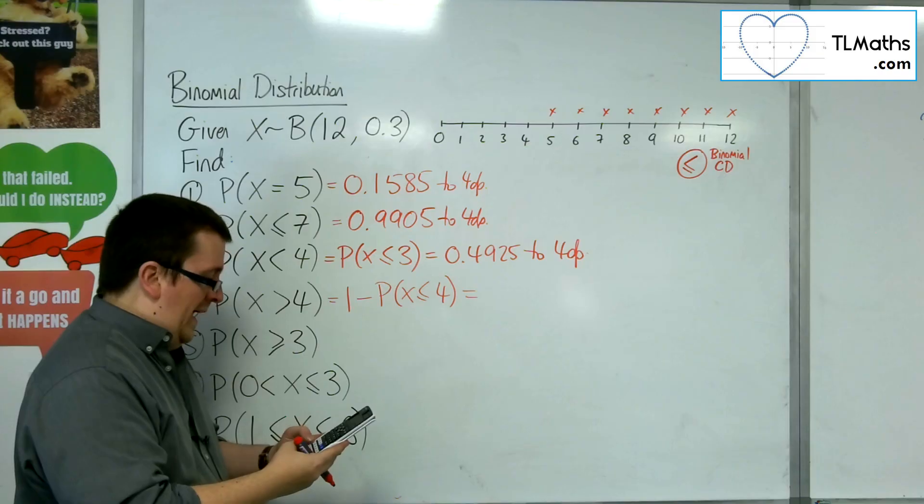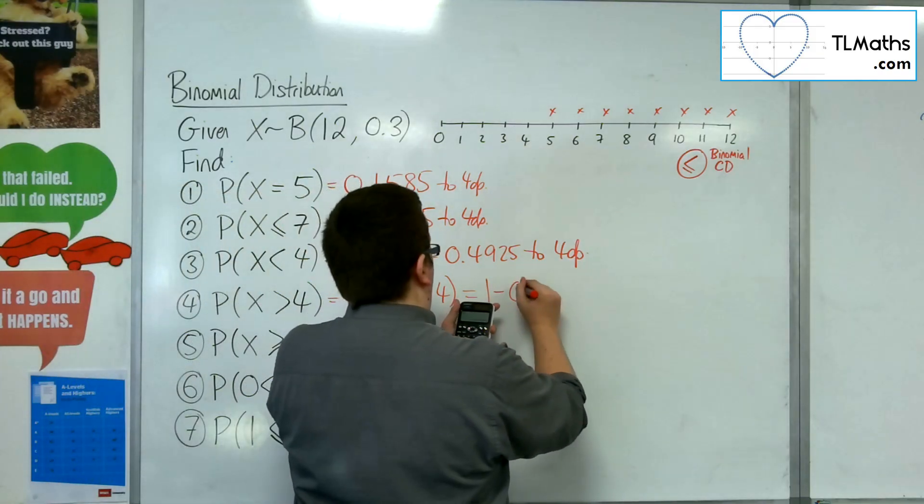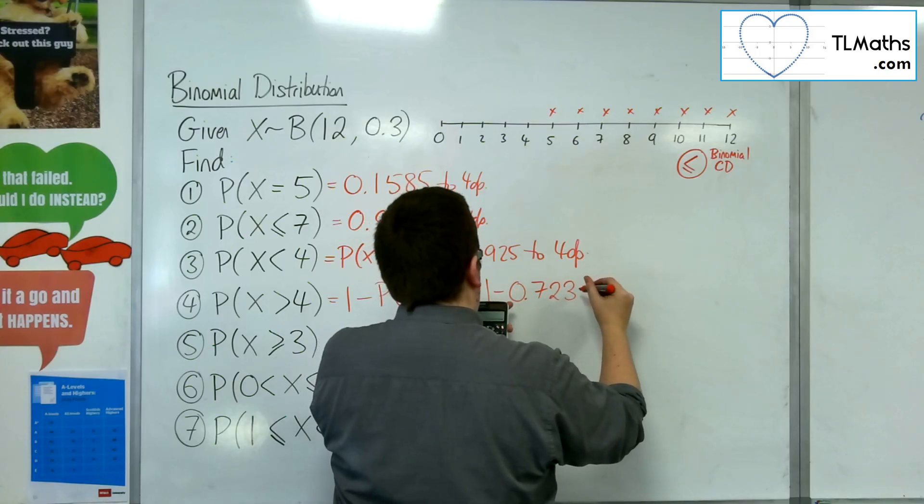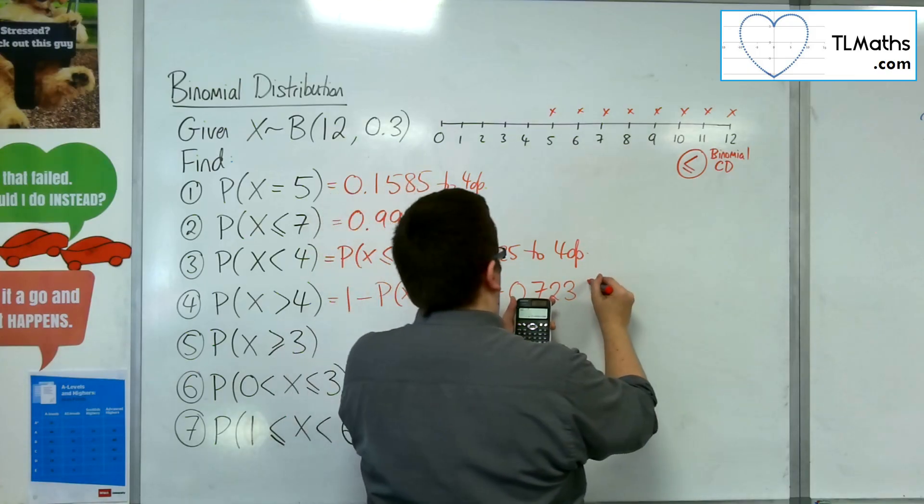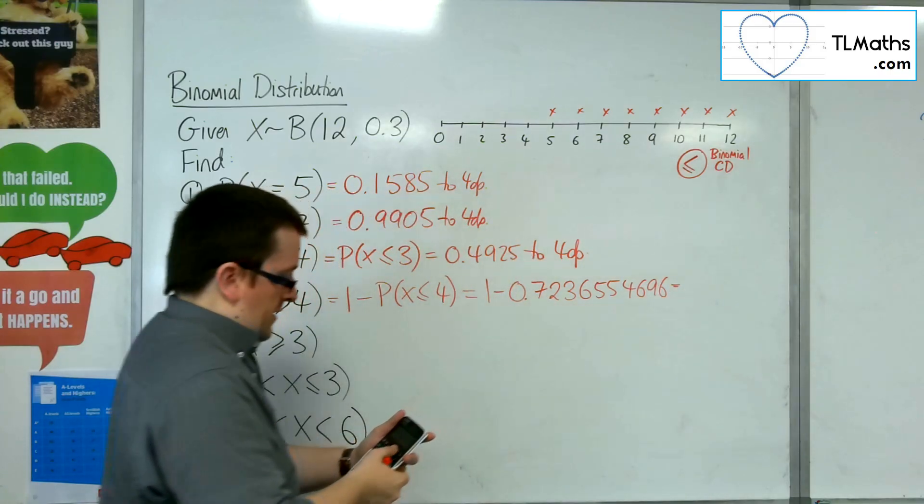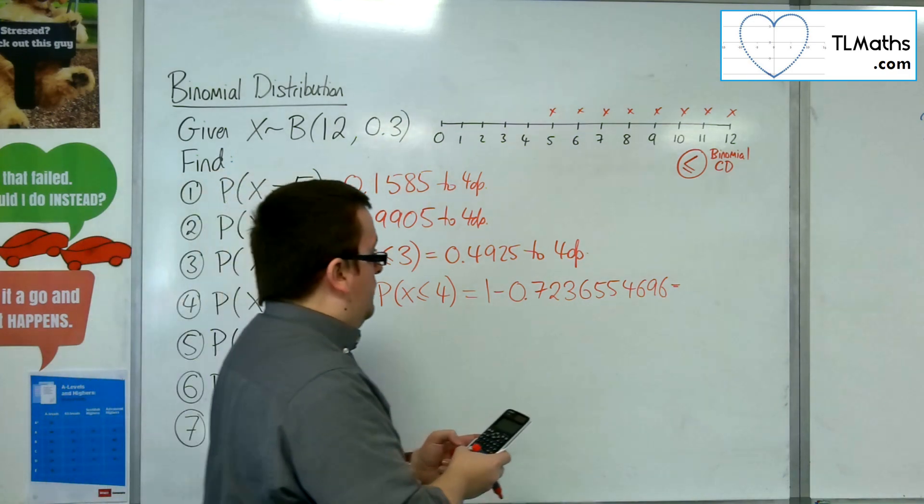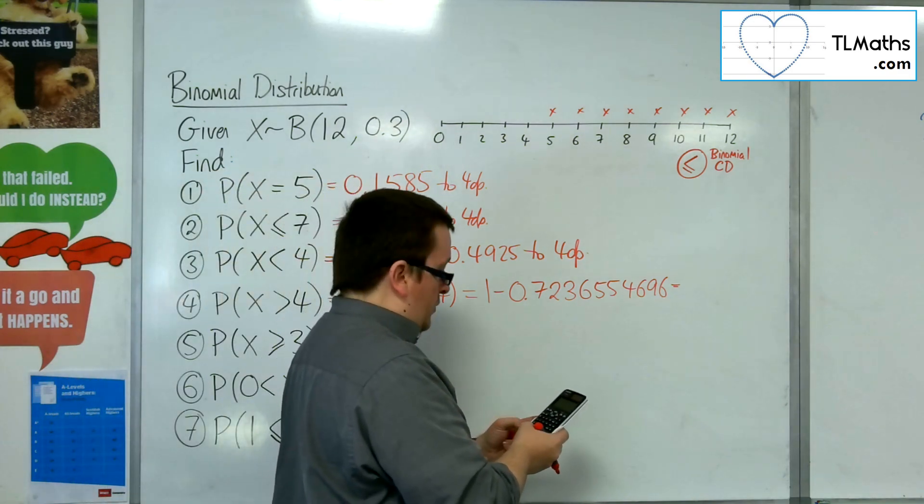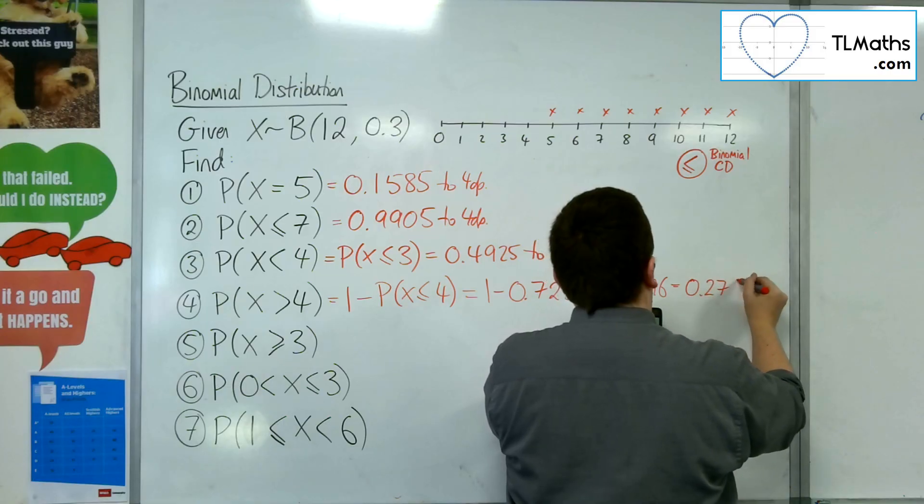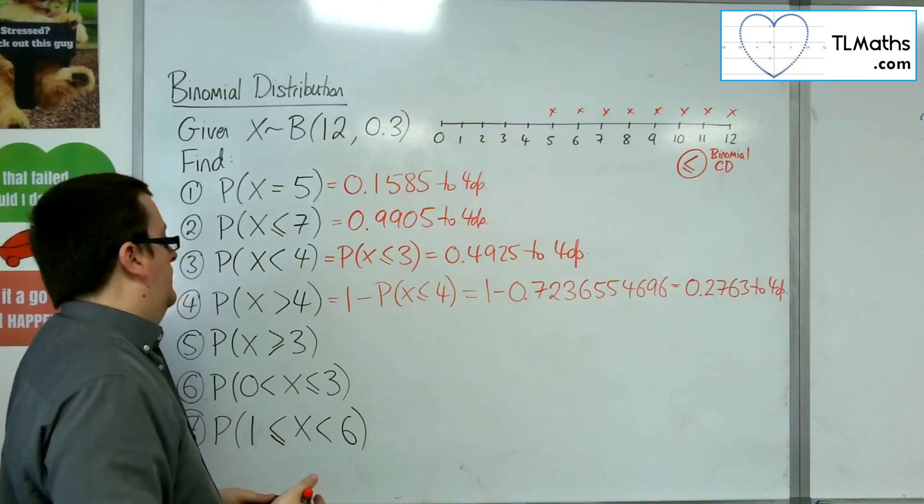So, if I go back in and do x is 4, I can get 1, take away 0.723, shall I round it? Let's keep, I'll just write up the whole thing. So then I can go back in and do 1, take away 0.72365469. And that will get me 0.2763 to 4 decimal places.